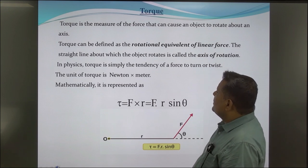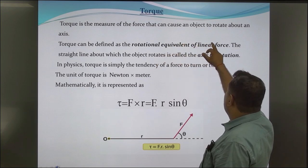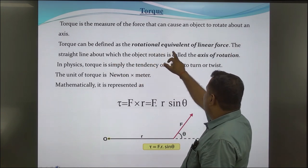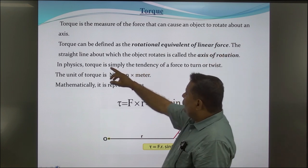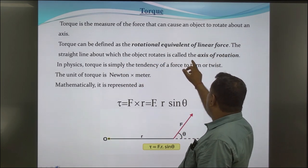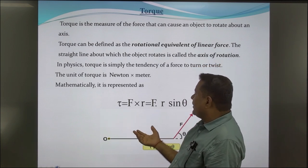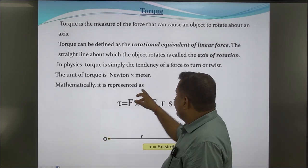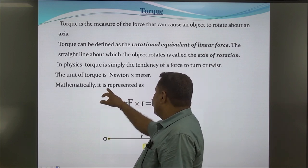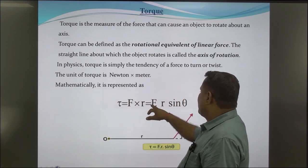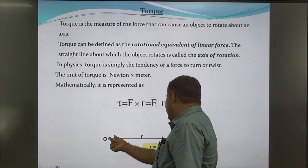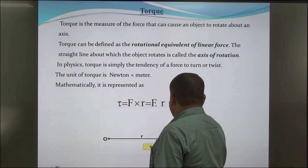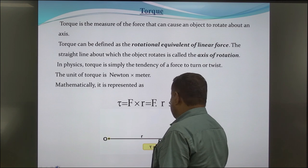Torque. Torque is the measure of the force that can cause an object to rotate about an axis. Torque can be defined as the rotational equivalent of linear force. The straight line about which the object rotates is called the axis of rotation. In physics, torque is simply the tendency of a force to turn or twist. The unit of torque is Newton-meter. Mathematically, torque τ = F × r = F·r·sinθ. If a force is applied at distance r at angle θ from the origin, then τ = F·r·sinθ.